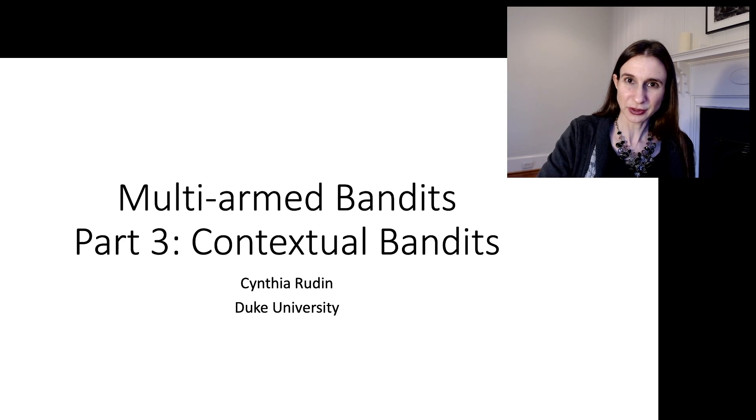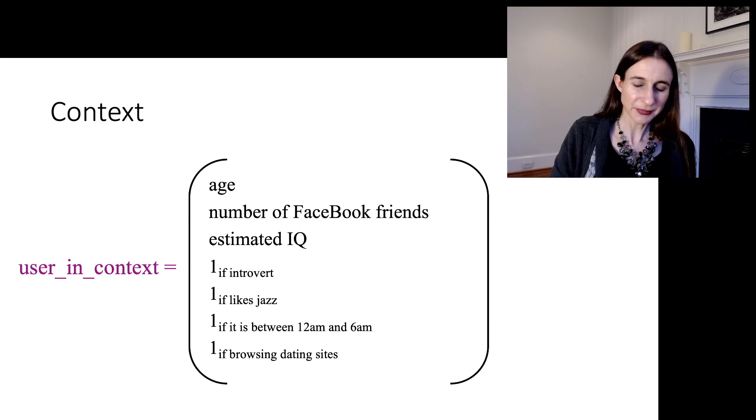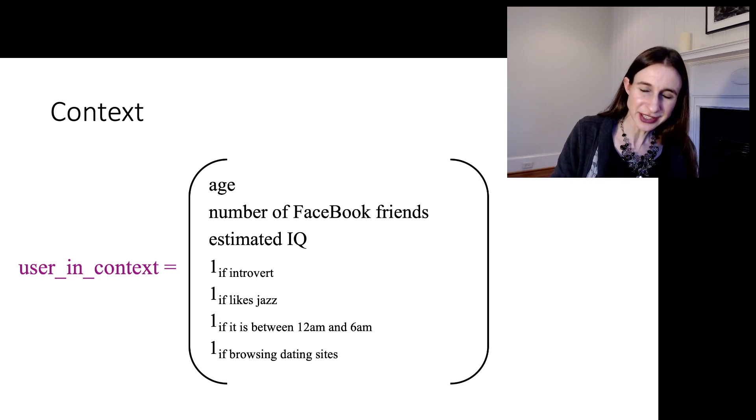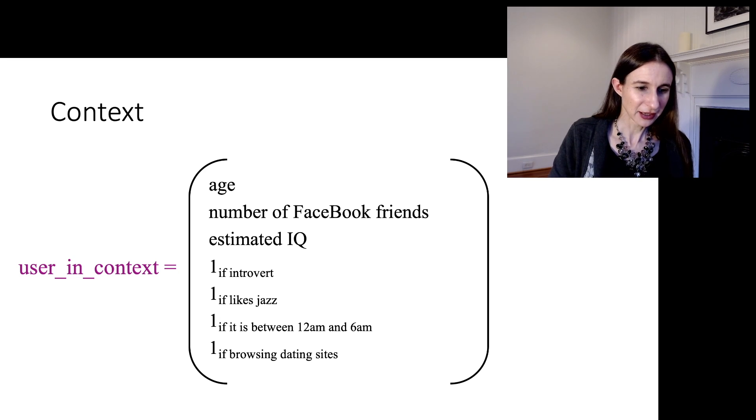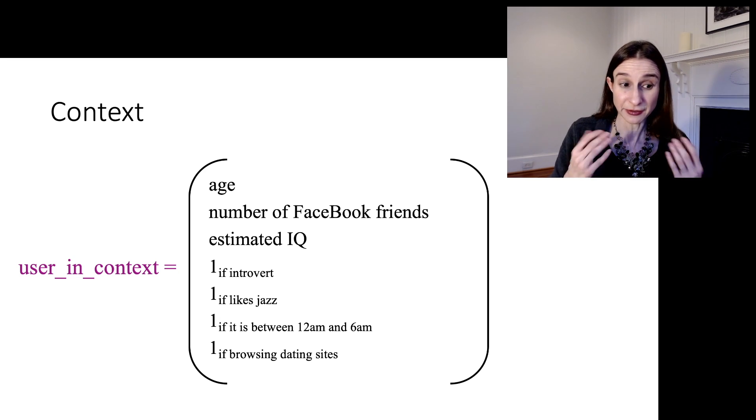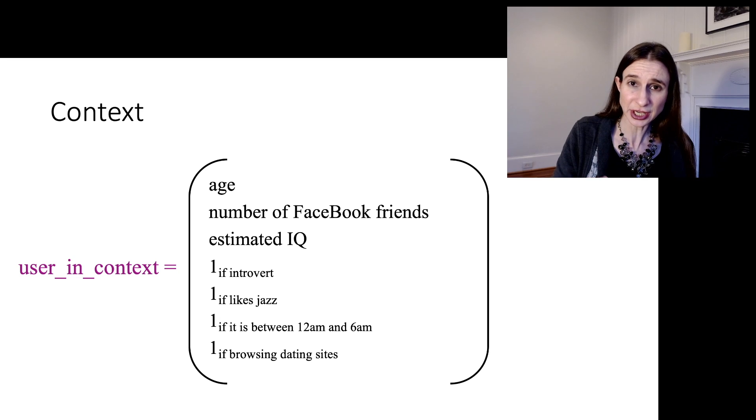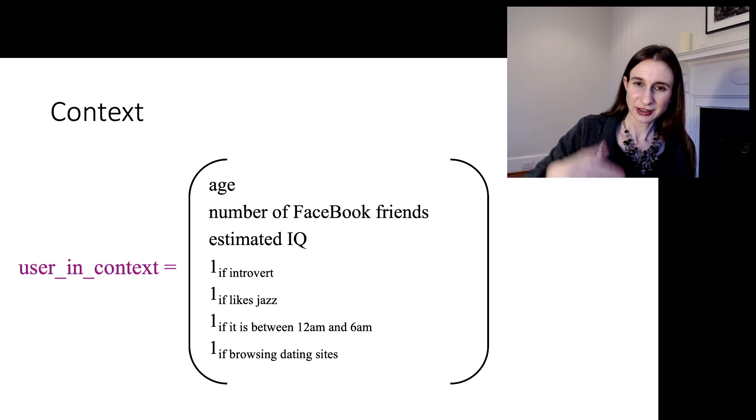Now I'd like to introduce contextual bandits, which is a variation of the multi-armed bandit problem where in addition to having a choice of arms, you also have a context vector at each time. A context vector is exactly a feature vector. So at each time you find out information that's supposed to help you figure out which arm to pick.